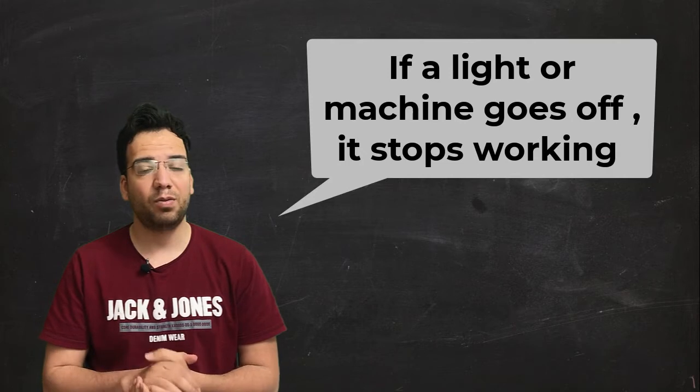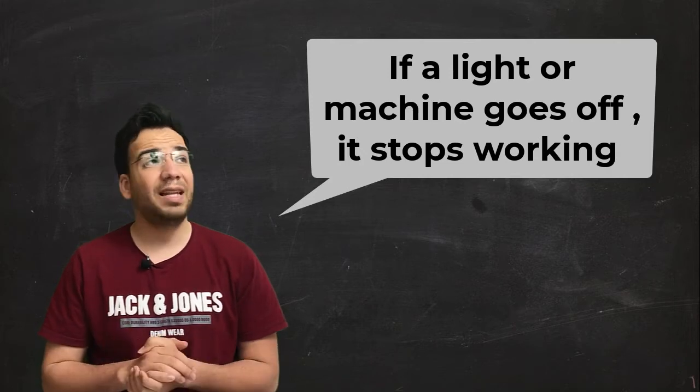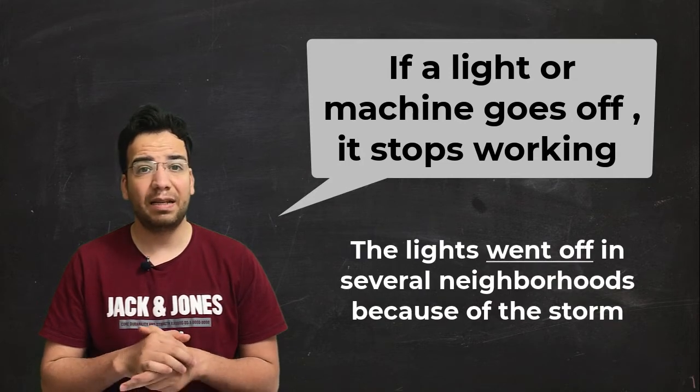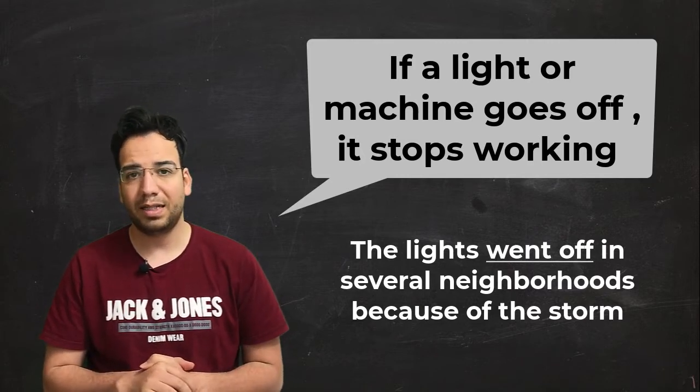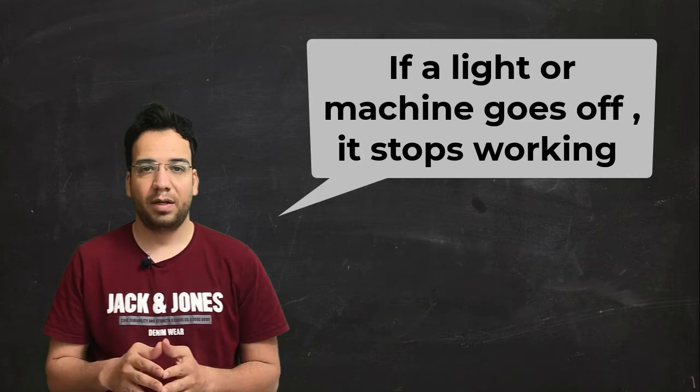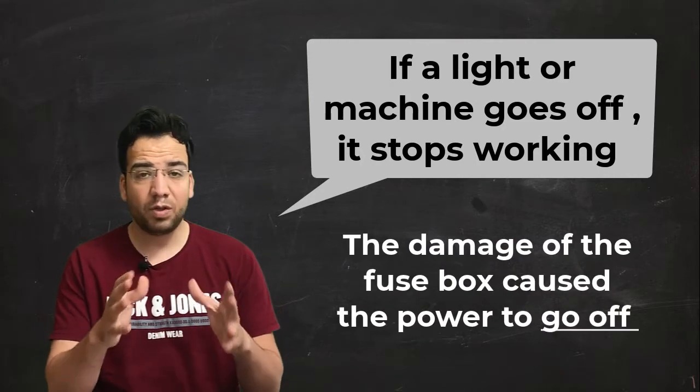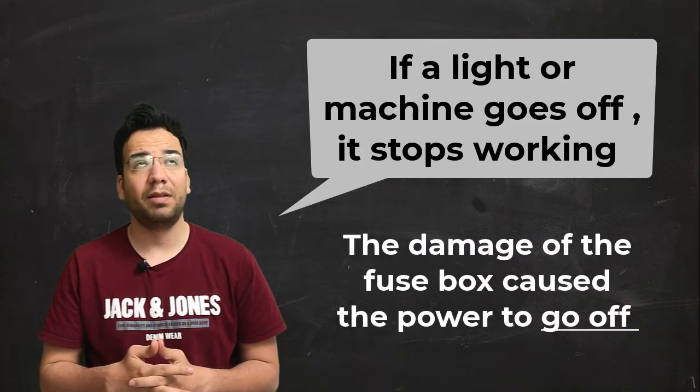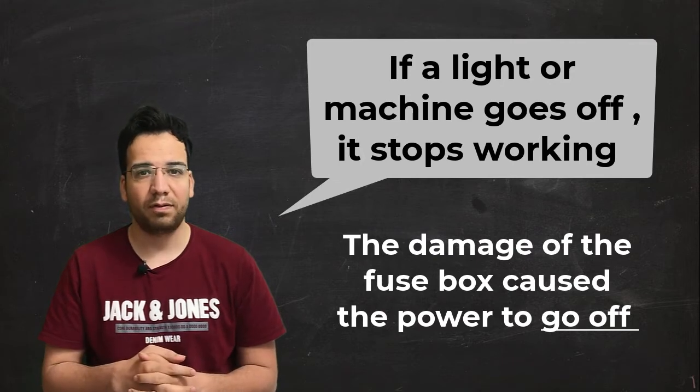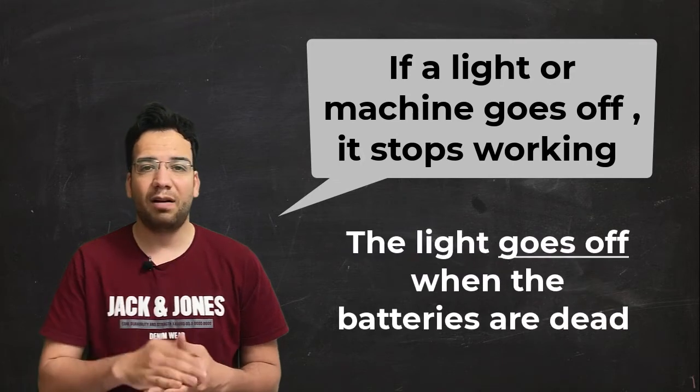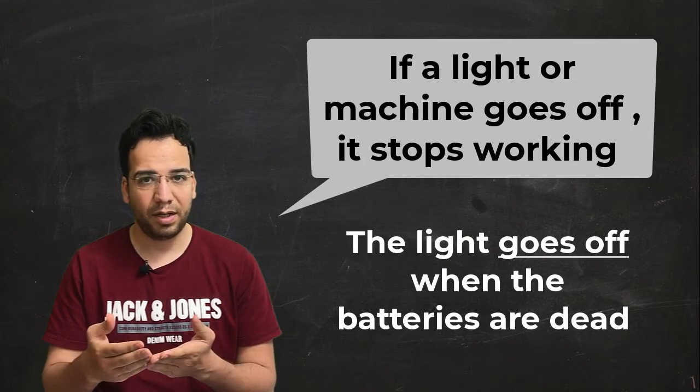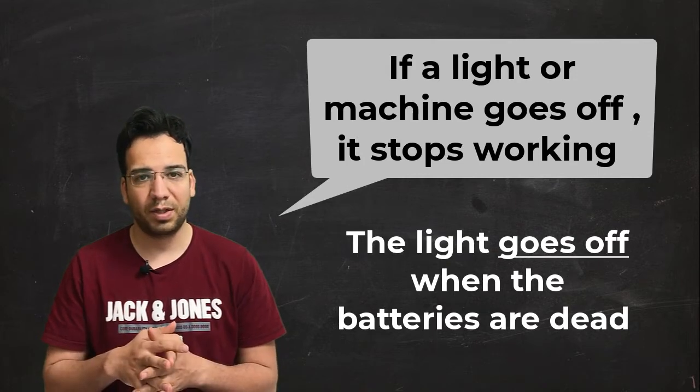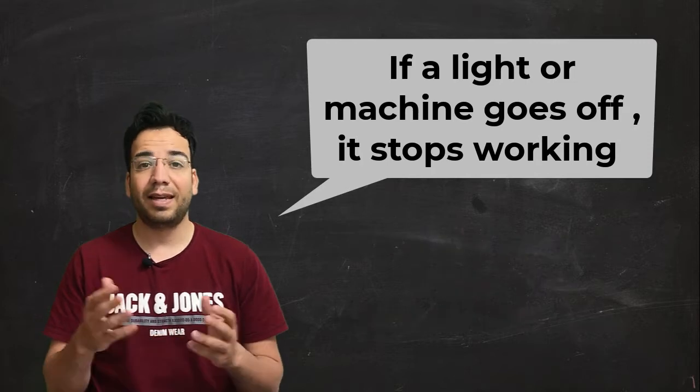For example, the lights went off in several neighborhoods because of the storm. So the lights stopped working. The damage of the fuse box caused the power to go off. The light goes off when the batteries are dead. When the batteries are not working, the light goes off, so the light stops working too.